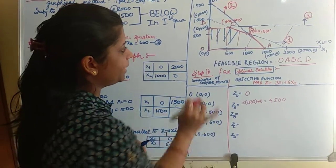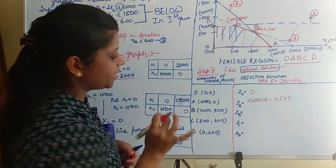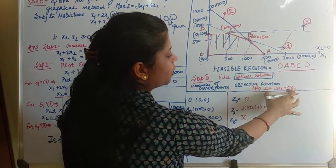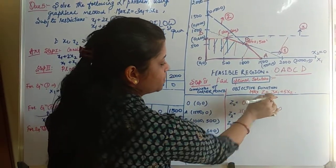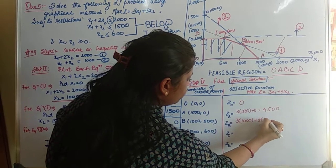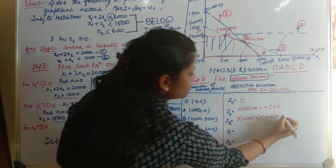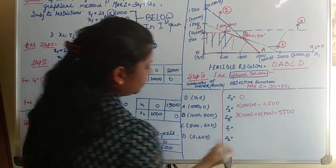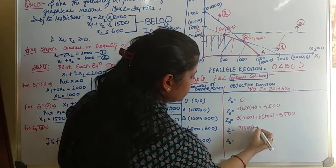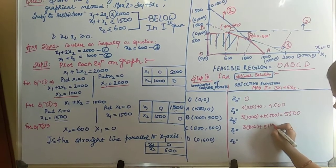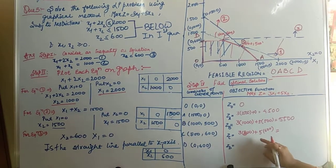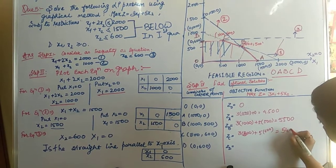Point B has coordinates (1000, 500). Putting these into the objective function Z: 3 × 1000 + 5 × 500 = 3000 + 2500 = 5500. Point C gives Z = 3 × 2400 + 300... wait, the value at C is 5400.